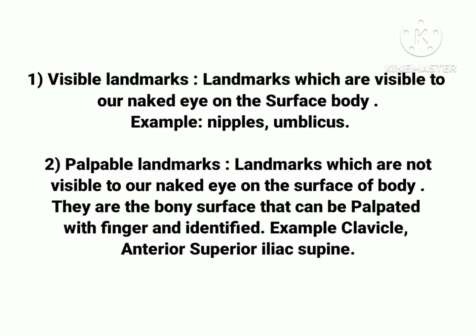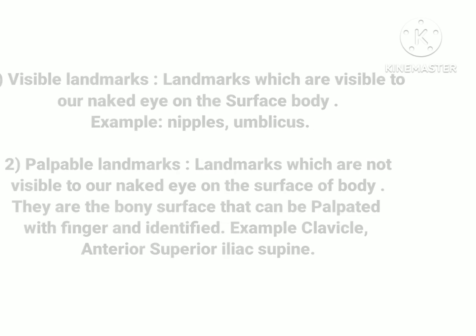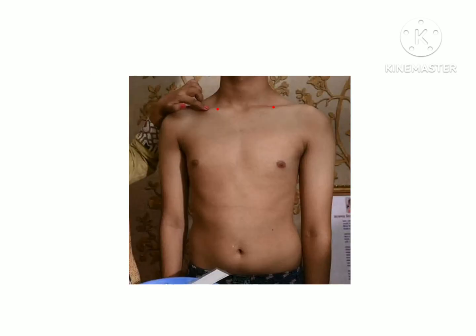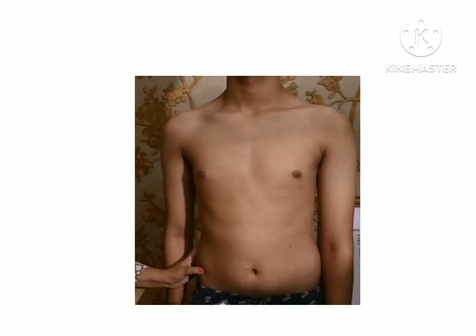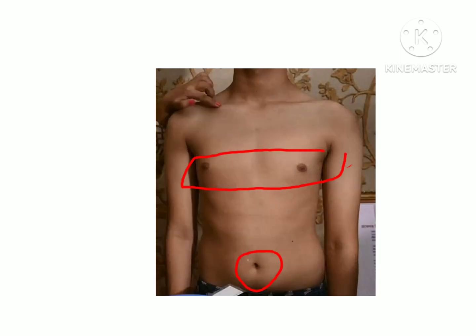For example, there is the clavicle and the anterior superior iliac spine. The clavicle is inside our body — we can feel it with our finger but we cannot see it. If you check this image, you will see the clavicles here, which are palpated and identified. You will also see the anterior superior iliac spine. Next you will see the nipples, which are visible to our naked eye, and the umbilicus.